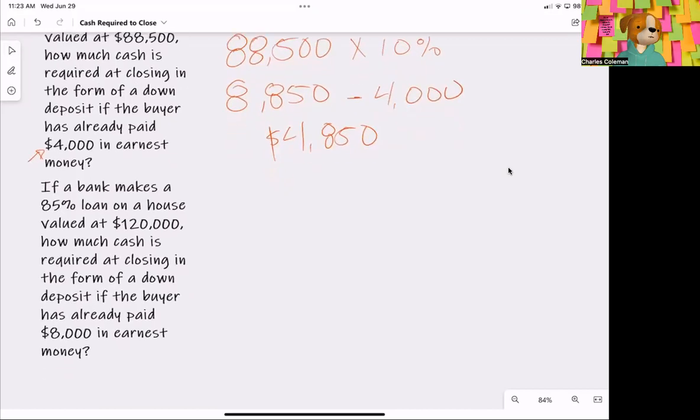A second question that you might see is going to look something like this. If a bank makes an 85% loan on a house valued at $120,000, how much cash is required at closing in the form of a down deposit if the buyer has already paid $8,000 in earnest money?